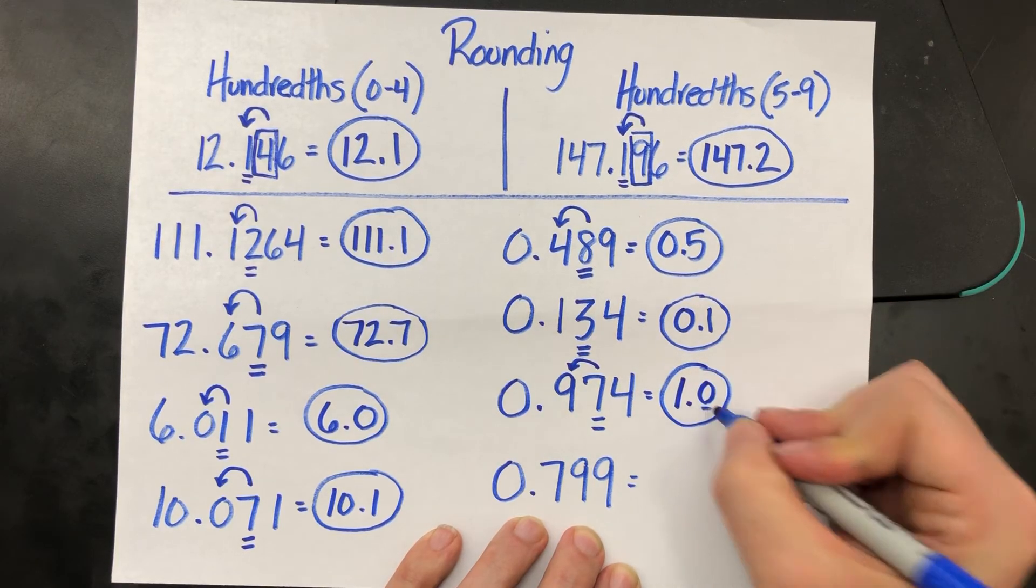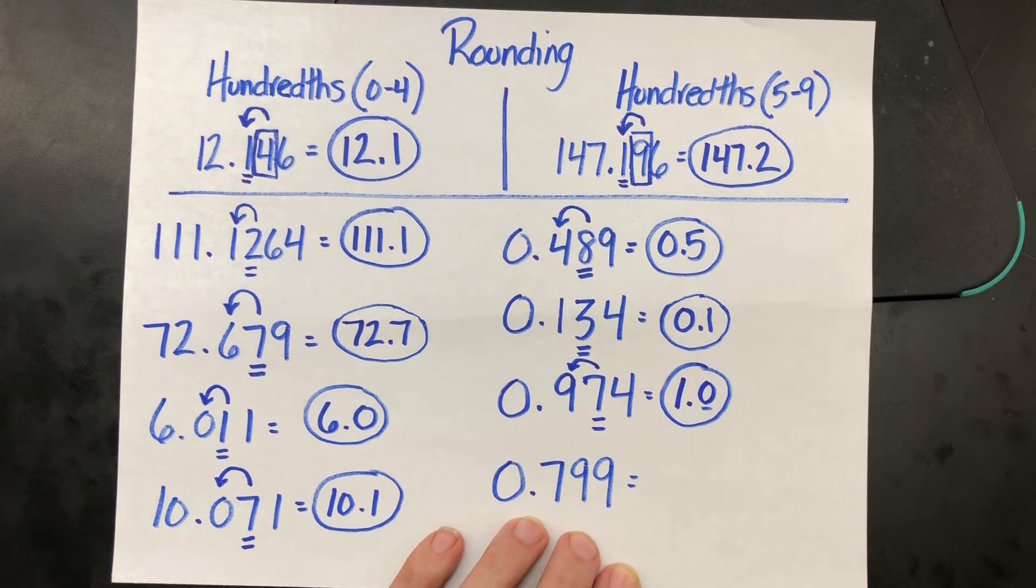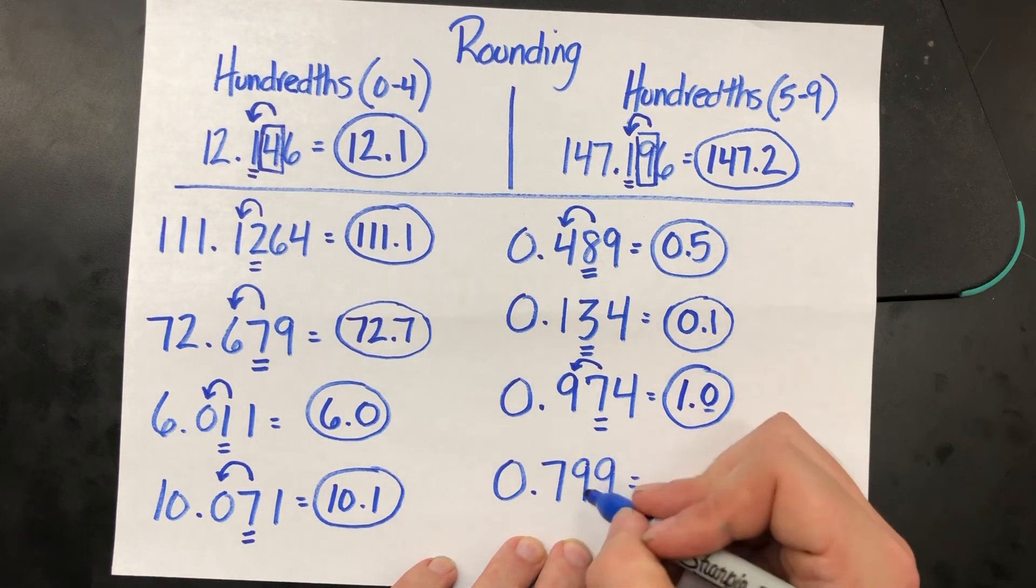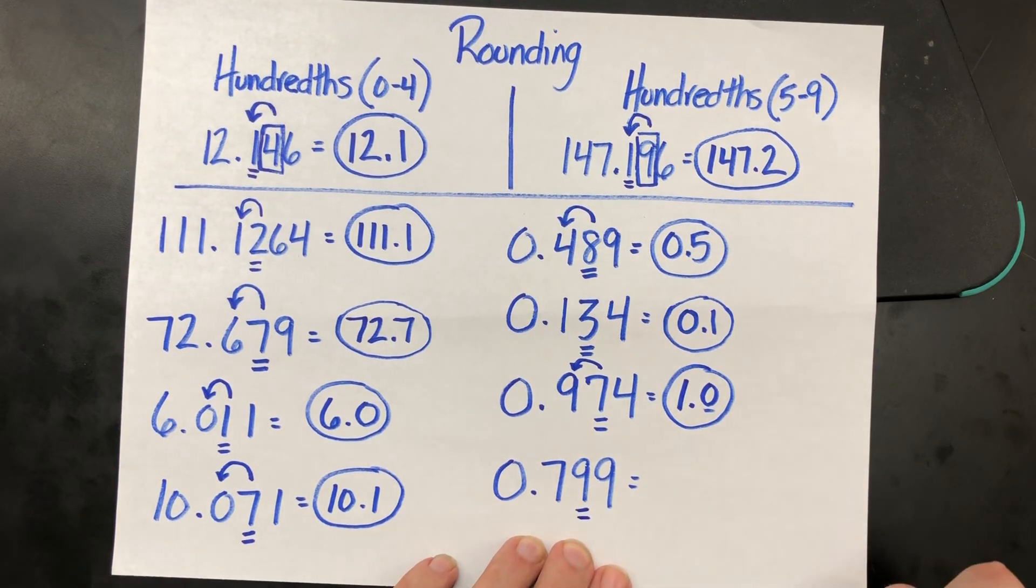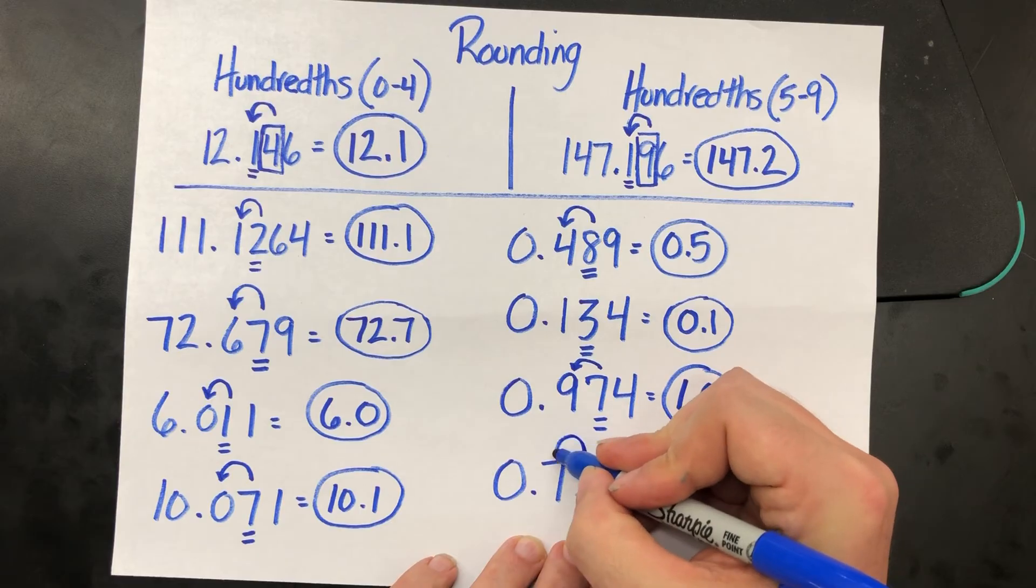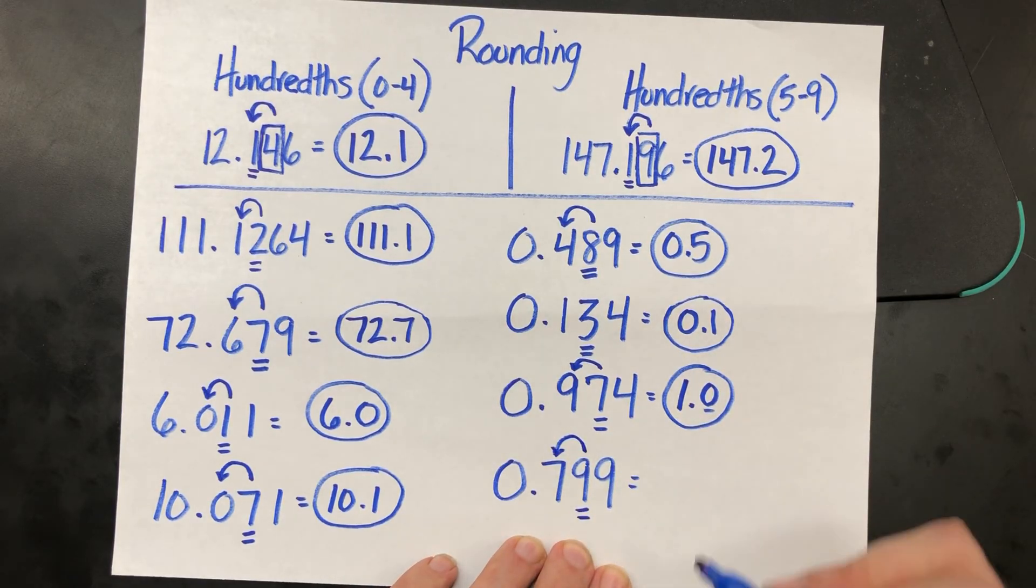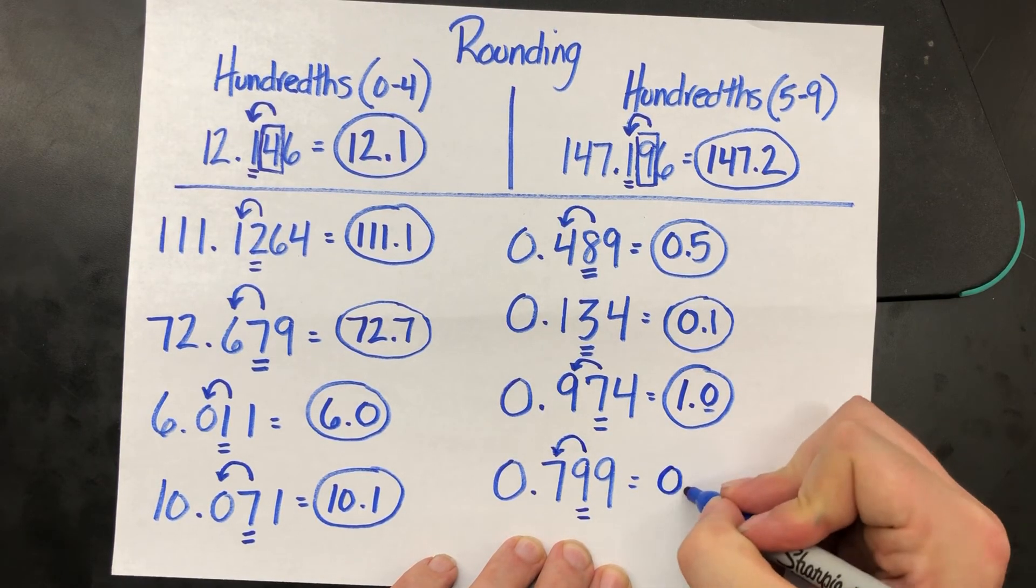And again, make sure you have that point zero as a scientific number. Zero point seven nine nine. The nine in the hundredths place will make that seven in the tenths bump it up one value. Zero point eight.